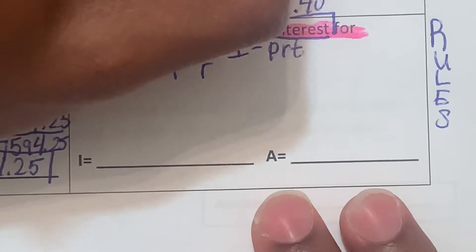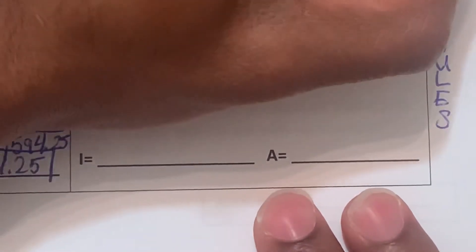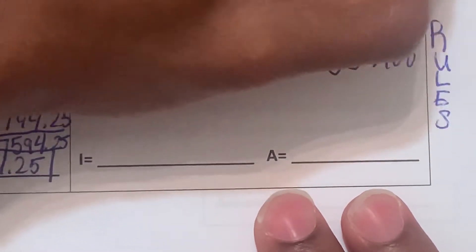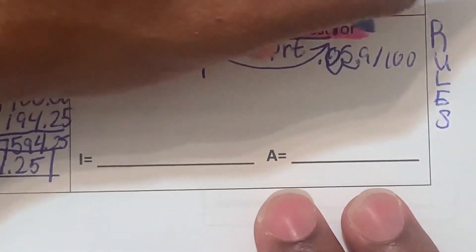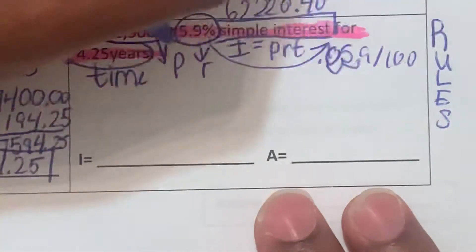So let's draw an arrow out here. 5.9 divided by 100. Move the decimal one, two spaces towards the left. So we're going to have .059 is going to be our decimal amount.